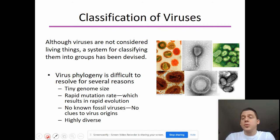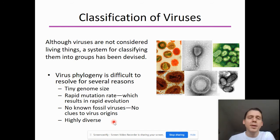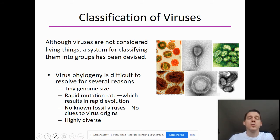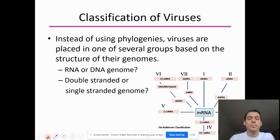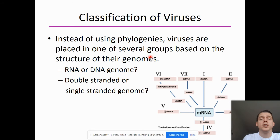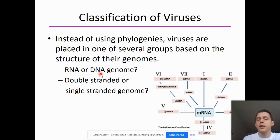Although viruses are not considered living things, we are still able to classify them, though it's difficult to do so definitively. Their genomes are really tiny, they mutate very quickly, we can't find fossils of them, and they are so diverse that many don't seem related at all. Instead of using phylogenies, viruses are placed in groups based on the structure of their genomes — whether they are RNA or DNA viruses, and whether they are double-stranded or single-stranded.